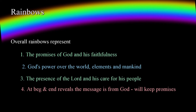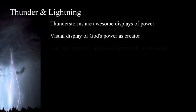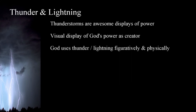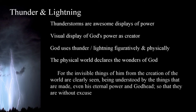In addition to rainbows, God incorporates images of other meteorological phenomena as representations of his power, including thunder and lightning. Thunderstorms are awesome displays of raw power and force. Although storms can turn deadly and result in catastrophic damage and loss of life, they nevertheless are visual displays of the power of the creator of the universe. Throughout the scriptures, God uses these phenomena as a physical and figurative sign. The physical world declares the wonders of God, and thunder and lightning are only two examples of the power that created them. Paul stated: 'For the invisible things of him from the creation of the world are clearly seen, being understood by the things that are made, even his eternal power and Godhead, so that they are without excuse' — Romans 1:20.